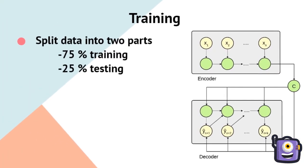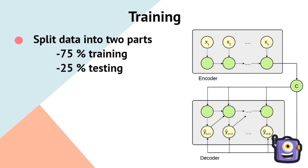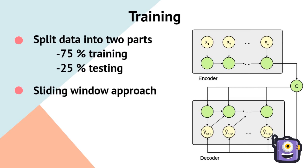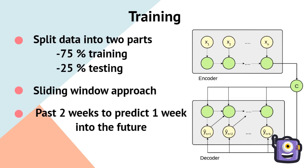We split the data into two parts: 75% for training and 25% for testing. We extract samples using a sliding window approach. We use data for the past two weeks to predict one week into the future.